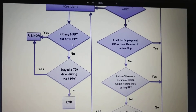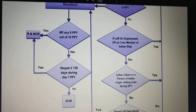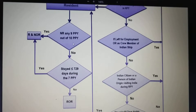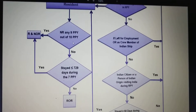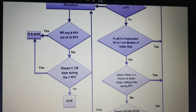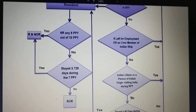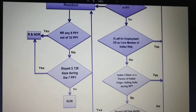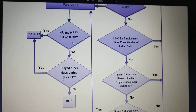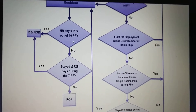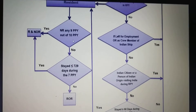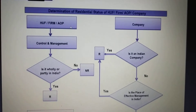If no, we will check whether he stayed less than or equal to 729 days during the 7 preceding previous years. If no, then he will be resident ordinarily resident (ROR). If yes, then he will be resident and not ordinarily resident (RNOR).